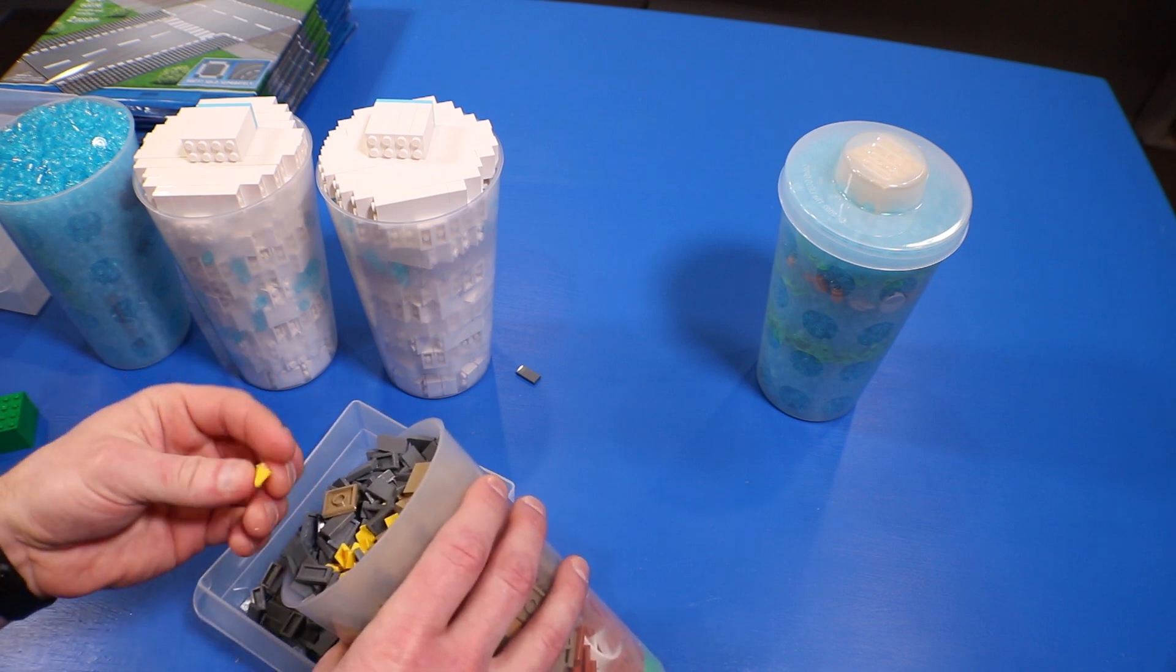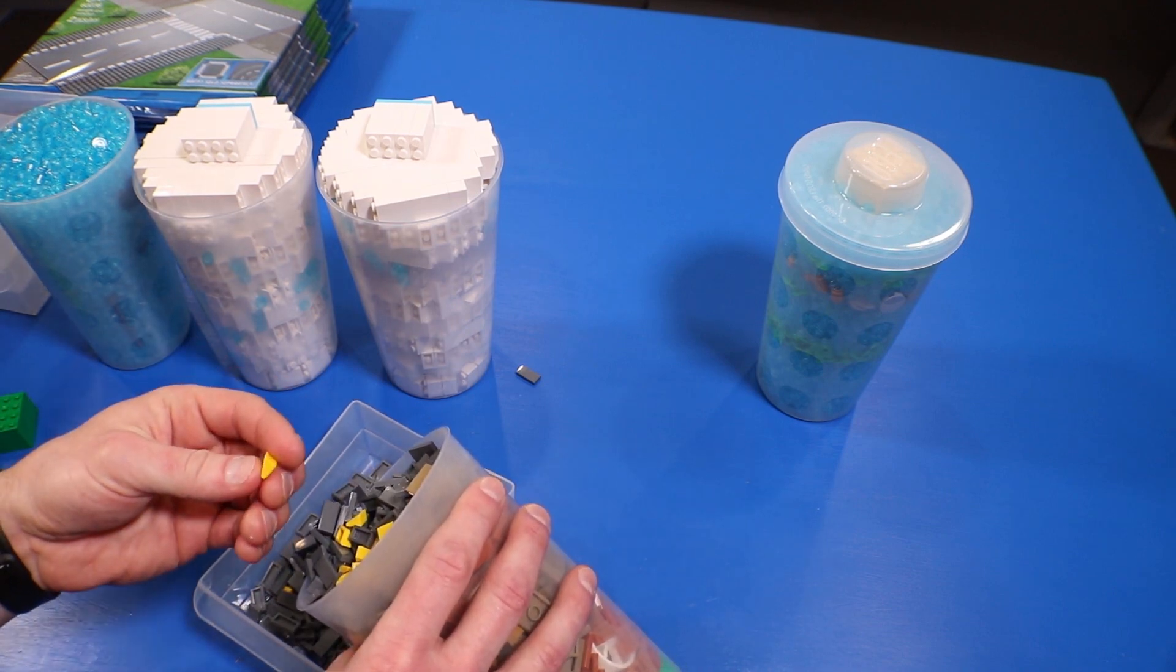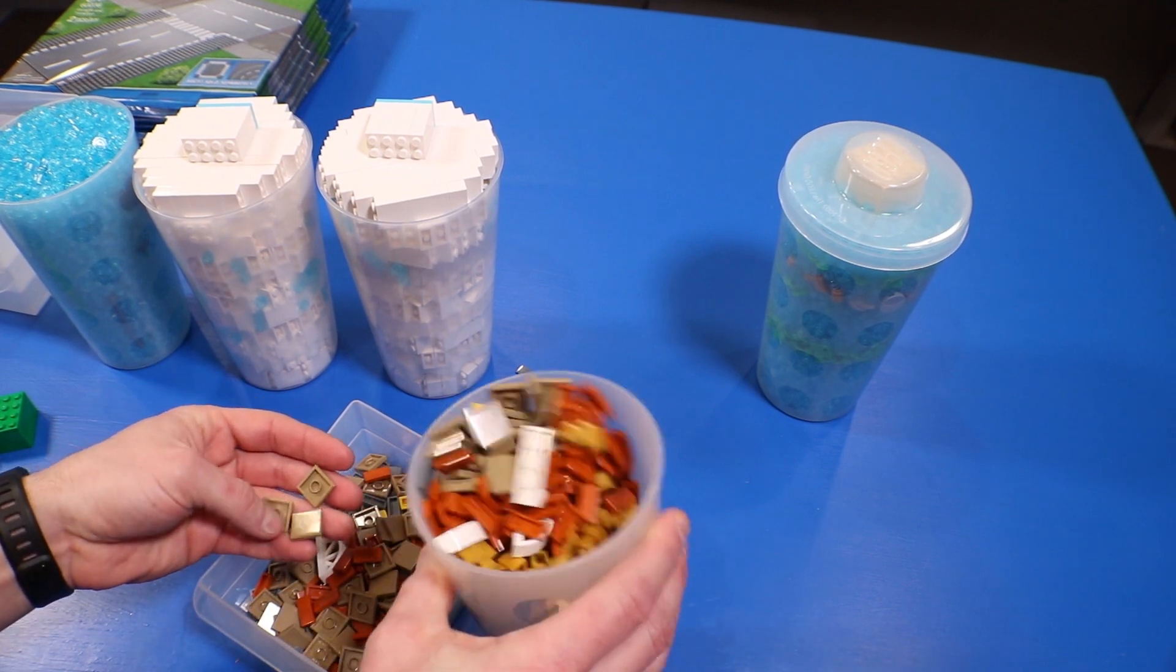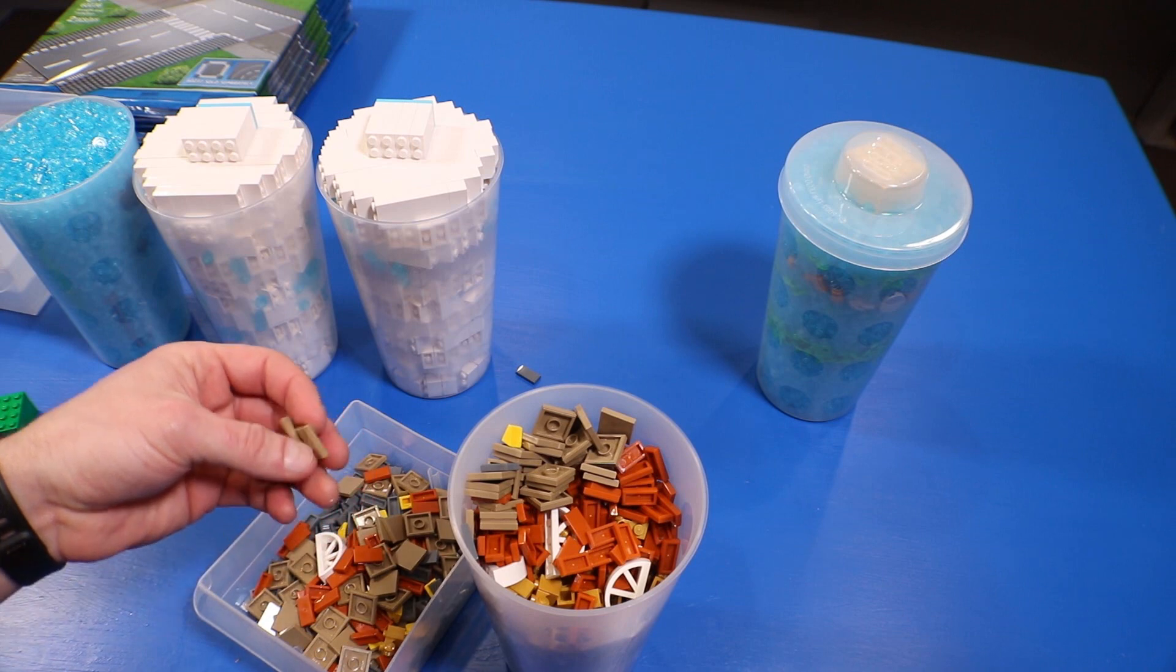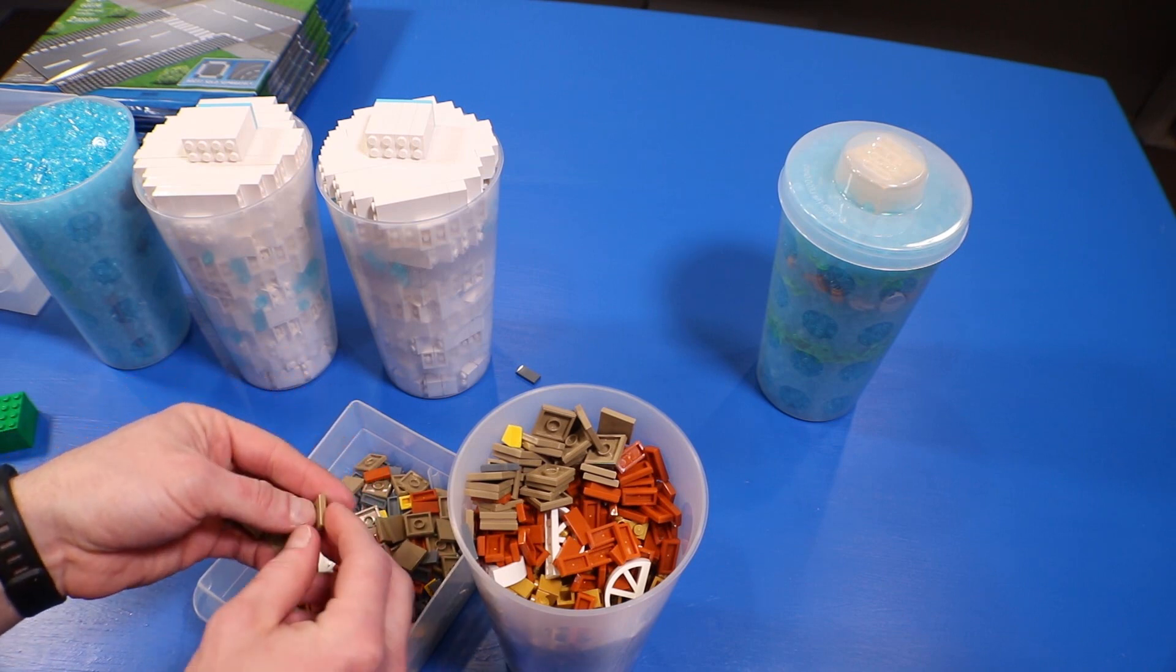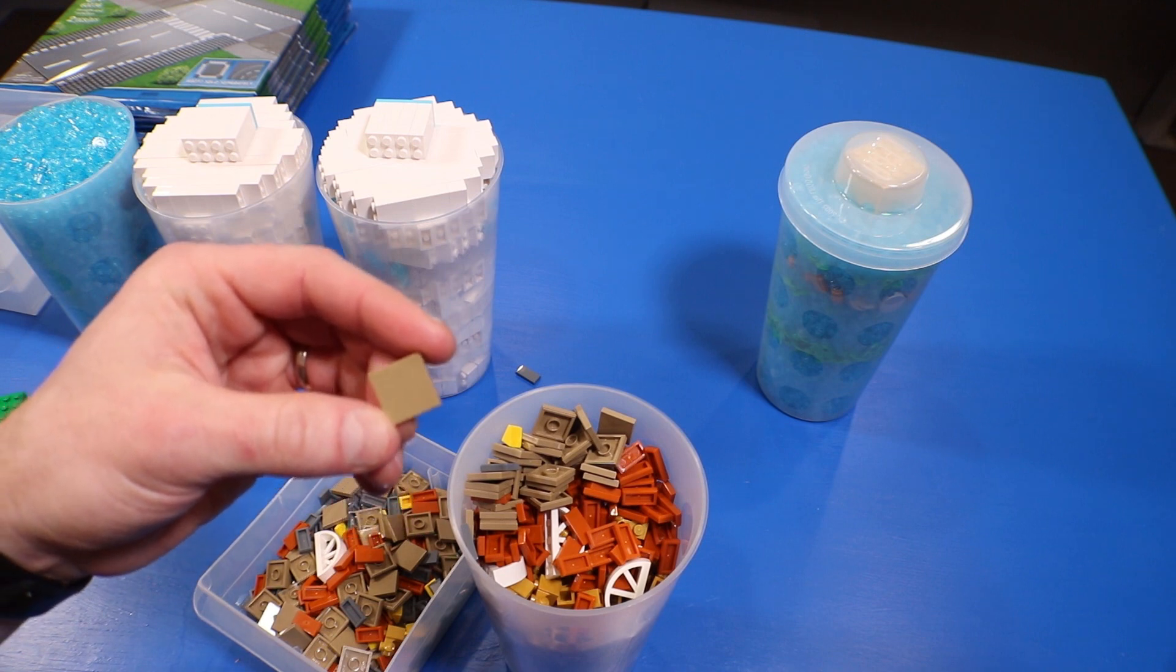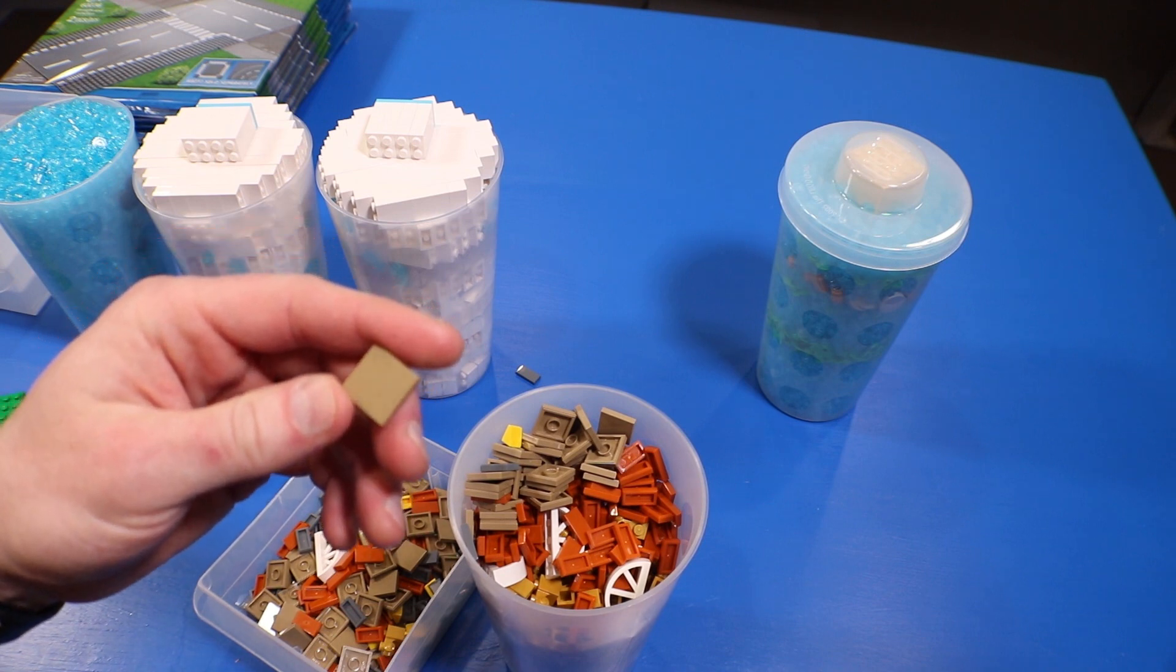We also, I guess we threw some of the cheese wedges in there. We've got some dark tan, some of these dark tan one by our two by two tiles as well.